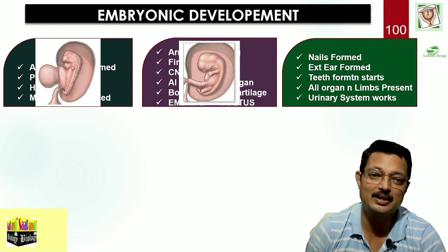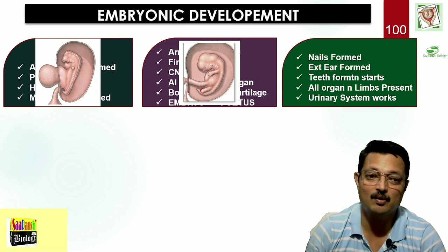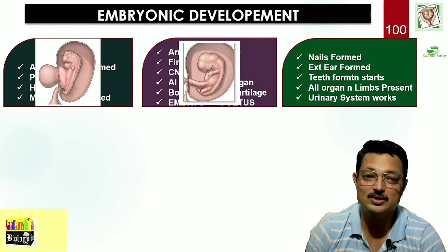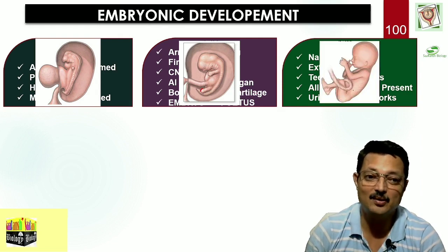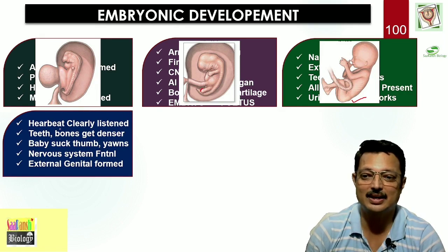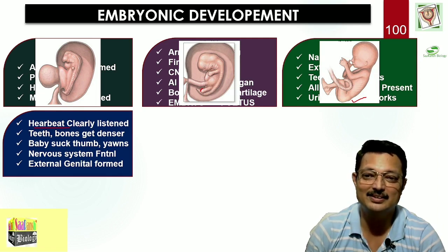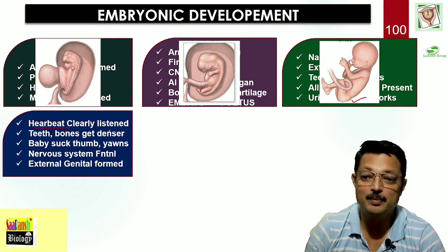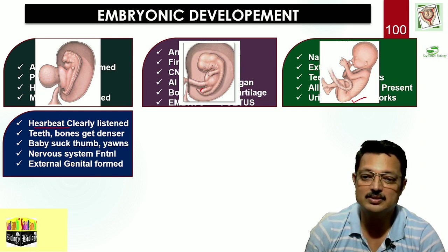Third month: nails are being formed, external ear is being formed, teeth formation starts, all organs and limbs are present, and the urinary system also starts working. By the third month, the shape of the human baby is very distinct and clear. Fourth month: the heartbeat can be clearly heard — this is where fathers listen to the heartbeat of the baby. Teeth and bones get denser, the baby starts sucking its thumb and starts yawning. The nervous system is completely developed and external genitalia are being formed.